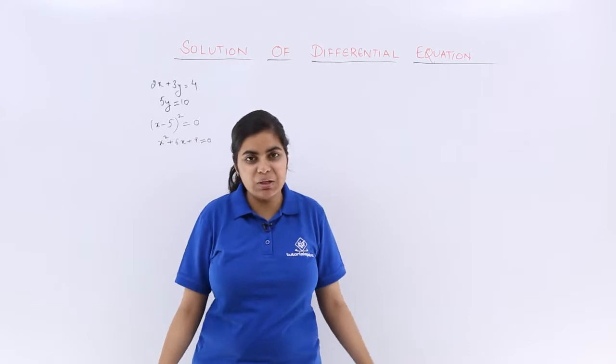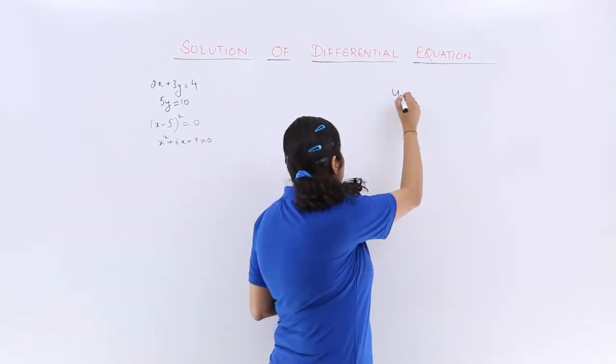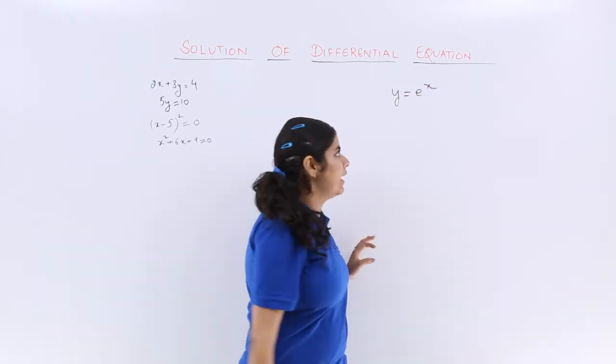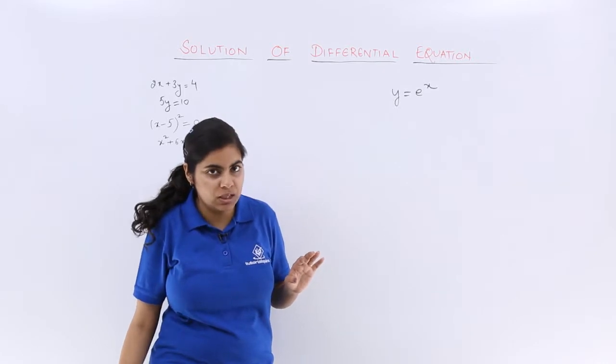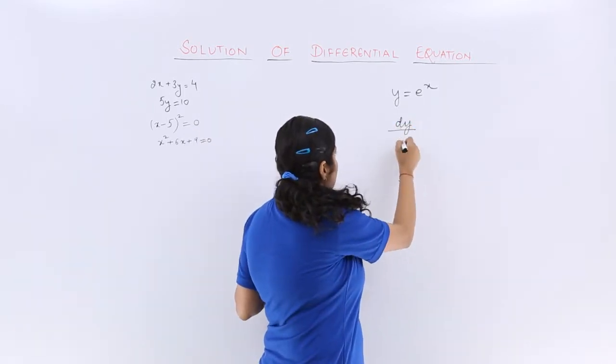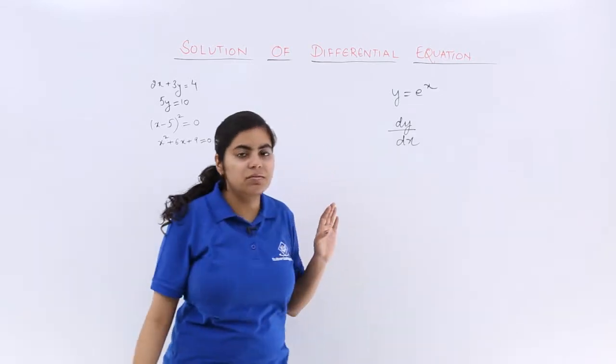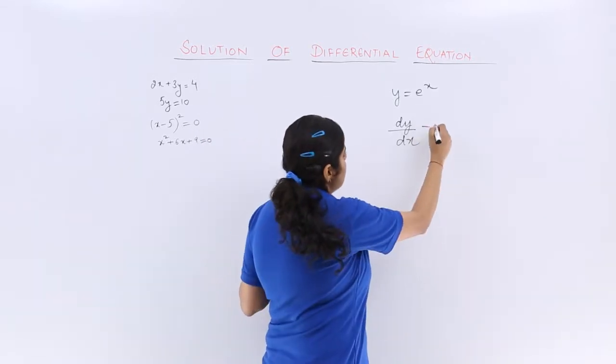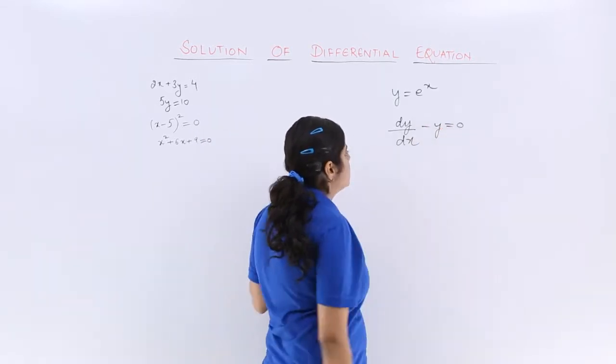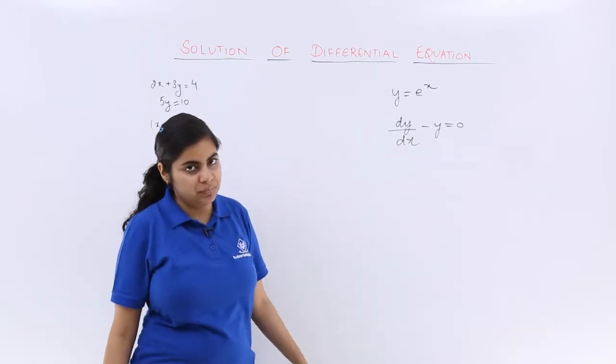Suppose you have y is equal to e raised to the power x as the given equation and you have dy by dx minus y is equal to 0 as the differential equation. Now, you have to check whether this equation is the solution to this differential equation.